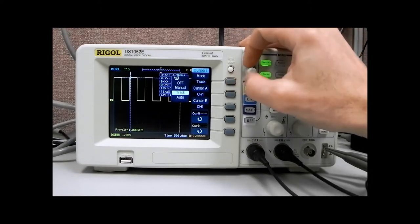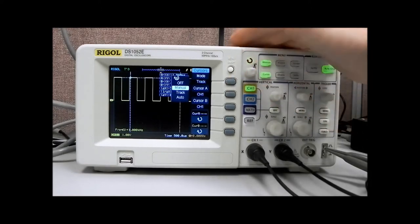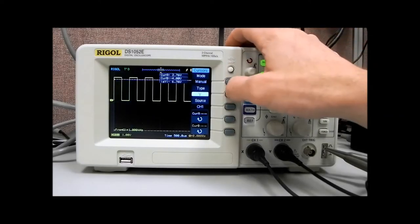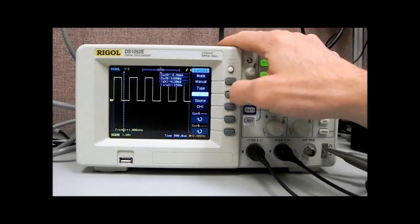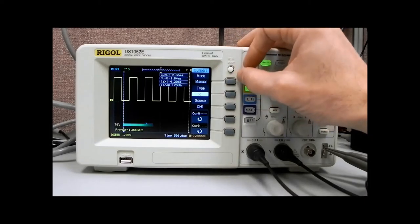If we wanted to do something a little more manual, we can go to the manual mode, and the manual mode is going to allow us to select either y, or the x-axis, and you can see they changed.